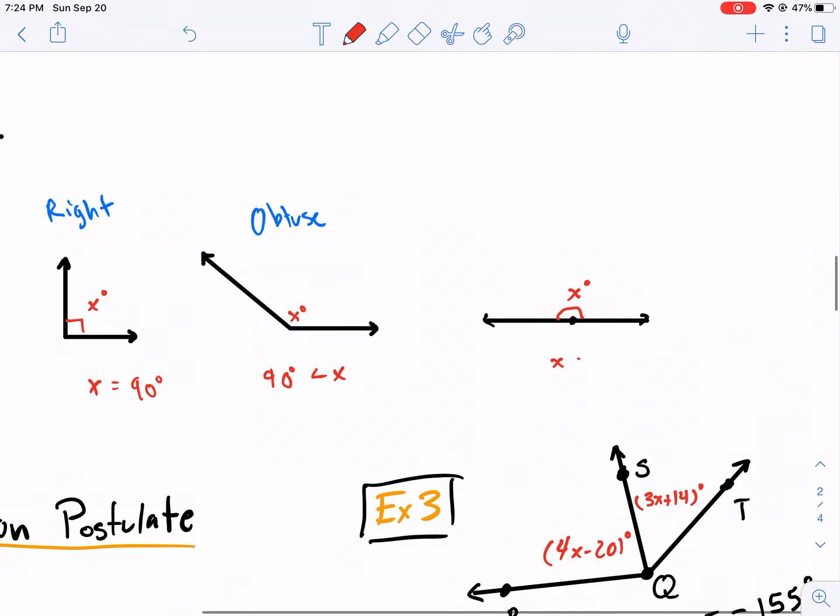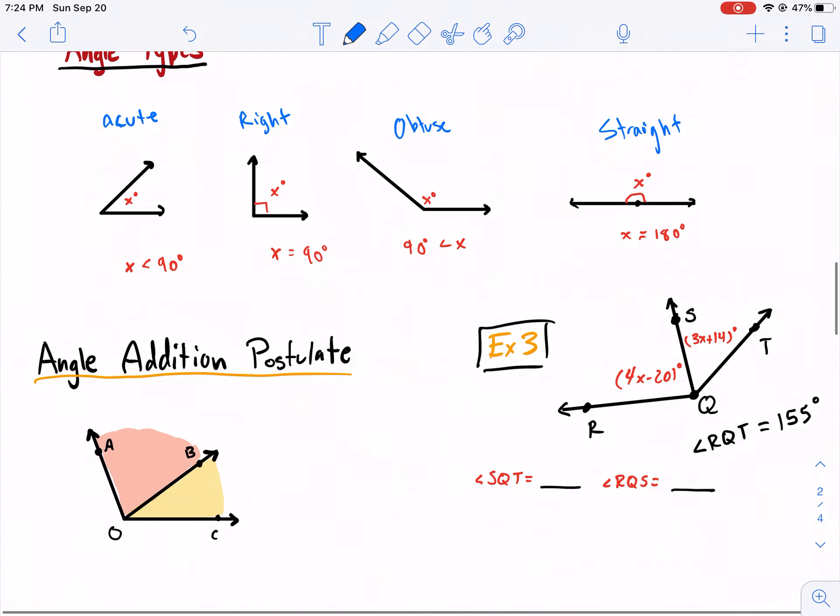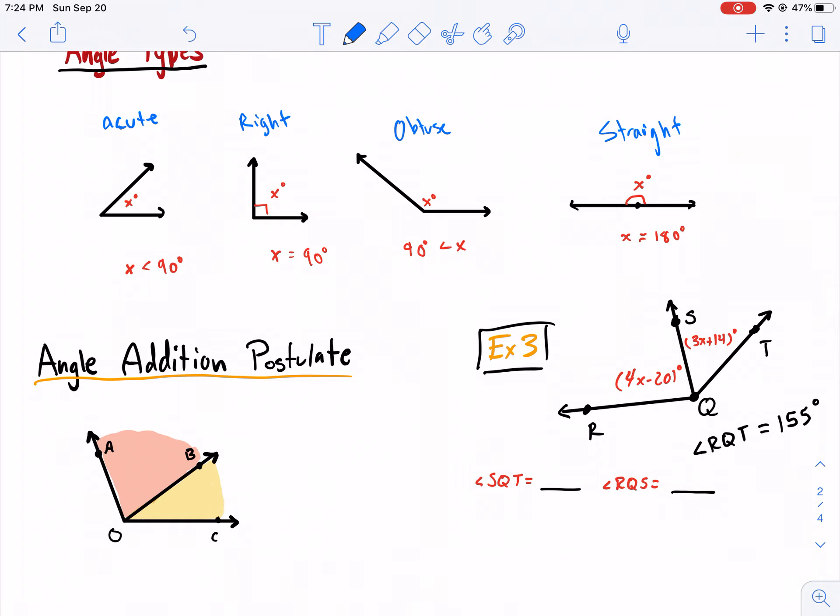And then we have the last one. This is called a straight angle, also known as a line. So a line essentially has a measure of 180 degrees. This is a straight angle. We're actually almost done. Can you believe that? We just cruised right through.